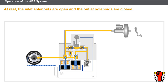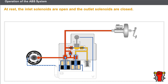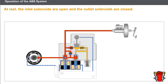Now let's look at braking without regulation. In the case of braking without regulation, the ABS unit does not intervene. The braking pressure is created via the hydraulic unit. At rest, the inlet solenoids are open and the outlet solenoids are closed. The increase in pressure takes place inside the circuit and builds up uniformly.